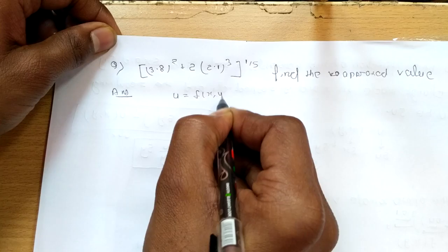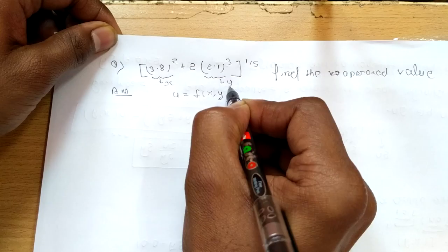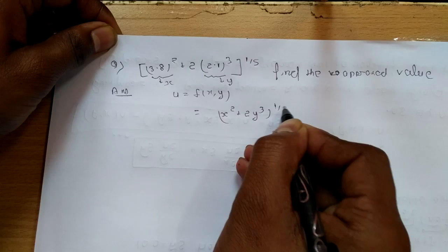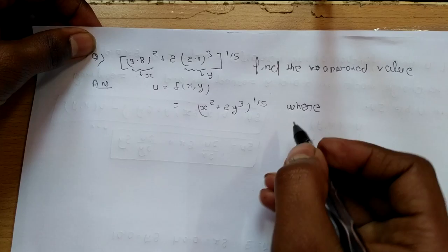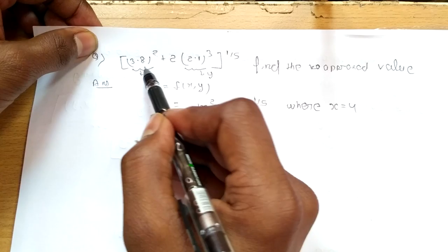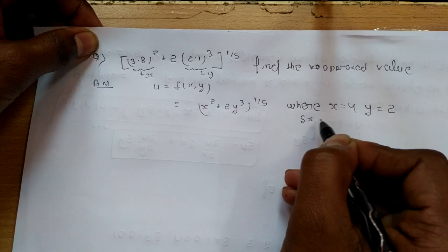Let us consider u = f(x, y). We consider the function u = (x² + 2y³)^(1/5), where x ≈ 3.8. The nearest whole number to 3.8 is 4, and y ≈ 2.1.